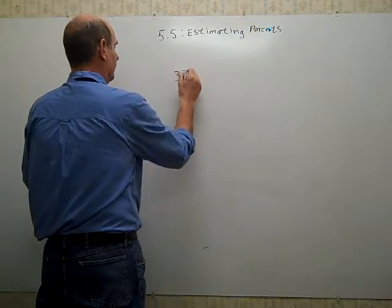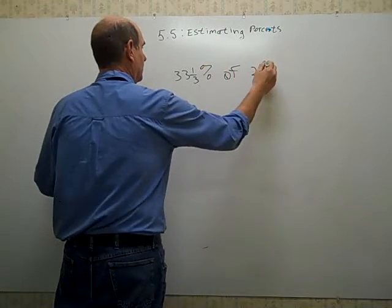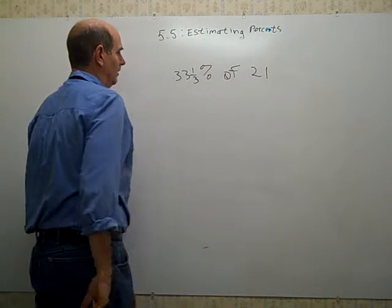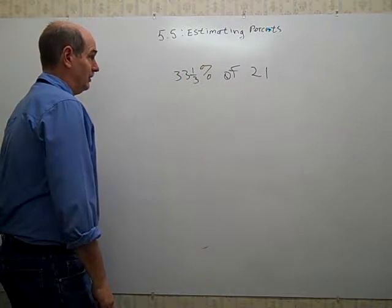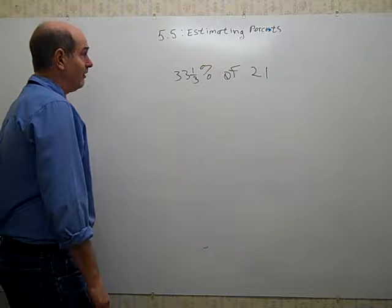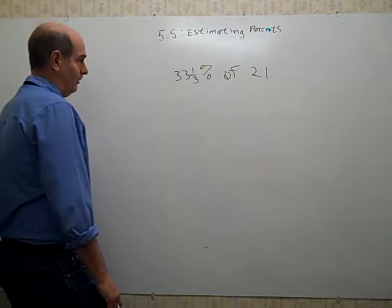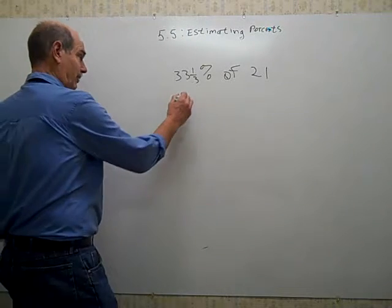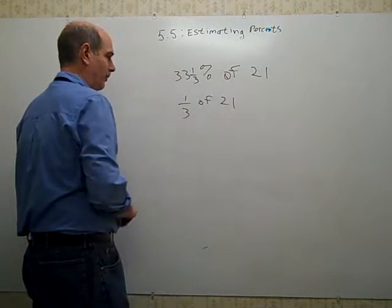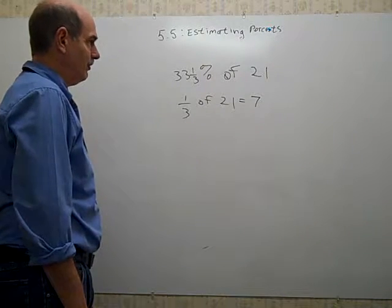So this is going to be 33 and a third percent of 21. Again, you probably don't want to do 33 times 2, but if you did, that would be 66. 66 is at least not a reasonable answer, maybe 6.6. And that's not a bad estimate, but there's a way to get, on this one again, an exact answer. Think about what fraction is 33 and a third percent. That's right, it's a third. A third of 21. Divide 21 into three equal parts, and each part would be 7. So 6.6 is not a bad estimate, but 7 is the exact answer.